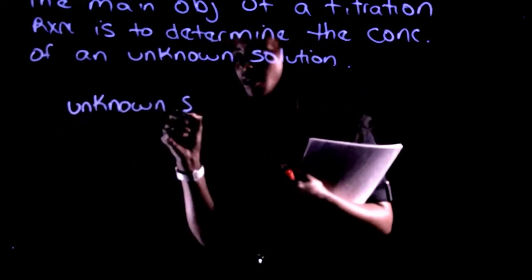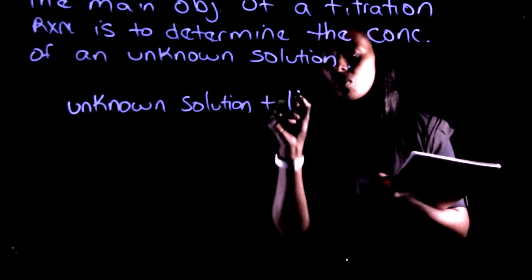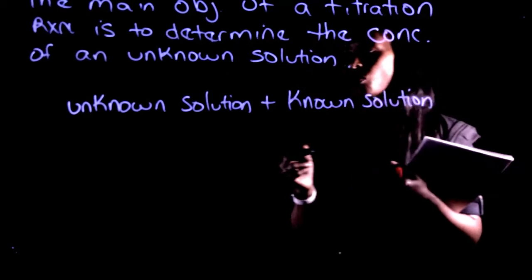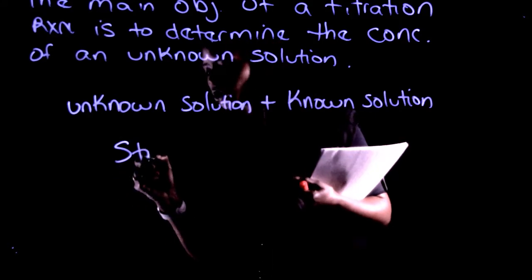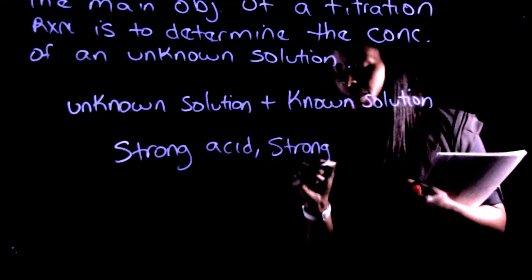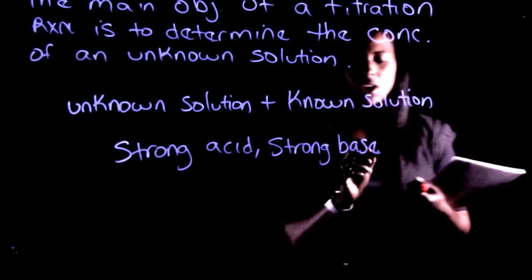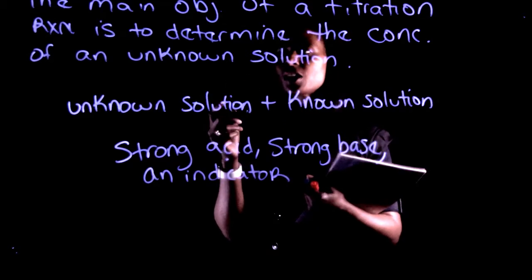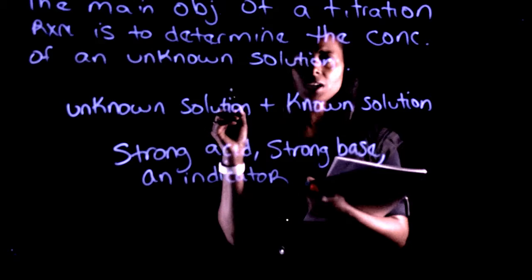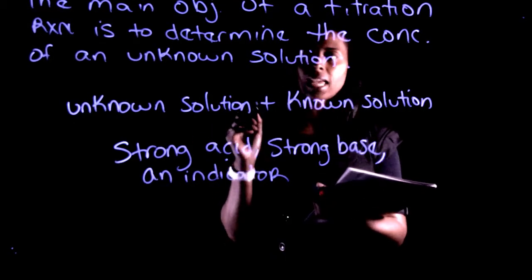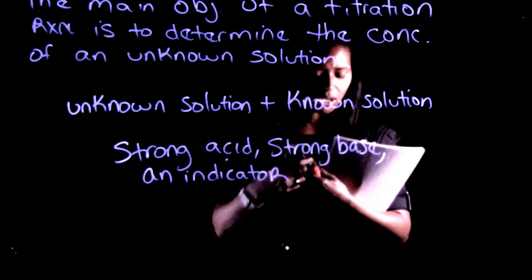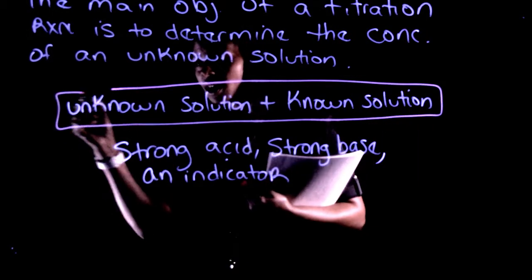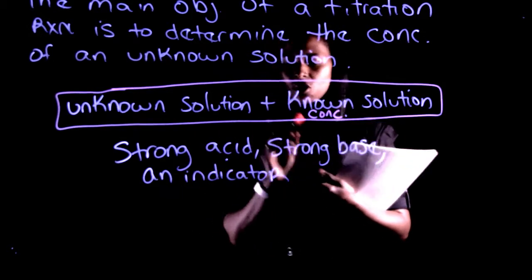You're going to have an unknown solution, but it has to react with something that is known. An unknown solution plus a known solution will allow you to determine the concentration through a titration reaction. You will need a strong acid, a strong base, and also, in order for the reaction to be seen in the lab, you need what's called an indicator.